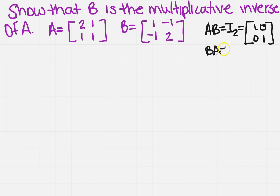So you also have to have that BA is the inverse. Again, you want the 1s on the diagonal. So if we can prove that those two things are equal to what we have right here, then we can show that B is the multiplicative inverse of A.